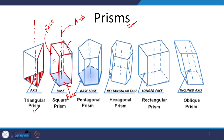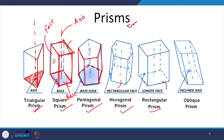A triangular prism has a triangular base and three rectangular faces. A square prism has a square base with rectangular faces meeting another square at the top. A pentagonal prism has a pentagonal base with rectangular faces. A hexagonal prism has a hexagonal base, and a rectangular prism has a rectangular base. All these are regular prisms with a perpendicular axis.